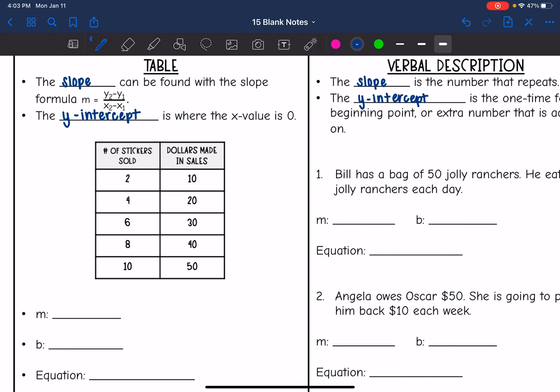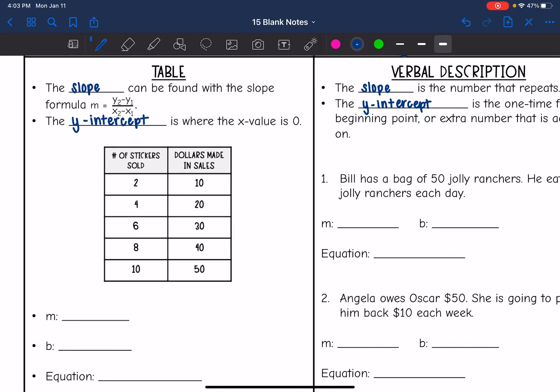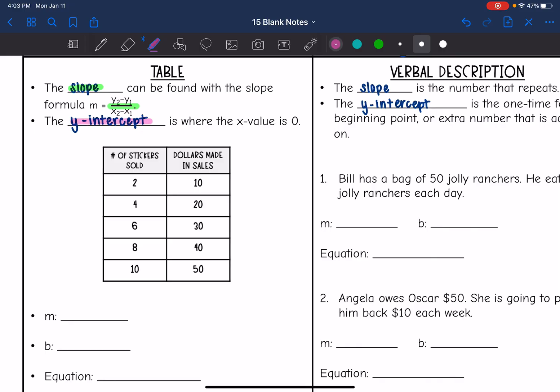Let's look at tables. I still need the slope and the y intercept. Remember, the slope on a table can be found with the slope formula, which is y2 minus y1 over x2 minus x1. And then the y intercept is where the x value is 0.